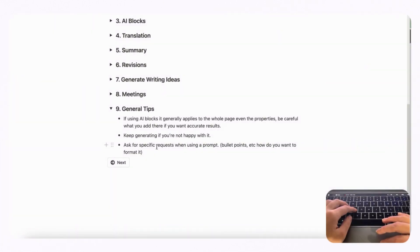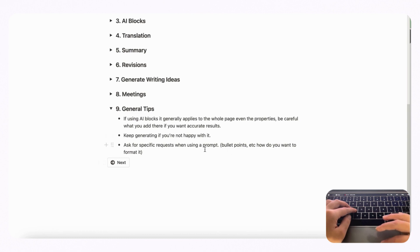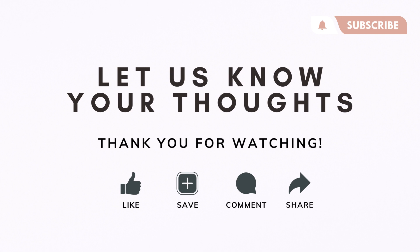Finally, some general tips. If you're using AI blocks, they apply to the whole page including properties, so be careful what you add for accurate results — headings like 'notes' or 'meeting notes' can get picked up oddly. Keep generating if you're not happy with the result; keep clicking update until you're satisfied. When writing a prompt, be specific — instead of just saying 'in bullets,' say 'in bullet points,' and specify how many characters or sentences you want. The more specific, the better. We hope this was useful — let us know in the comments what you think about Notion AI!